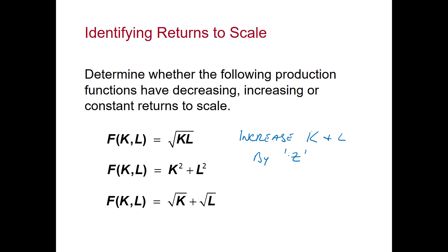Once we've increased both K and L by this factor Z, we see what happens to the production function. Does it increase by more than Z, less than Z, or just Z? We'll work through these three examples.